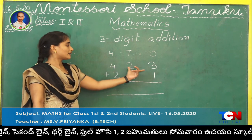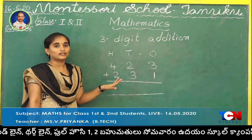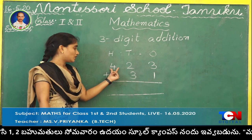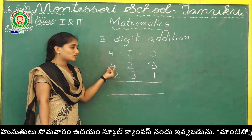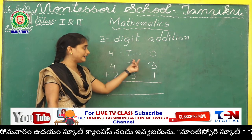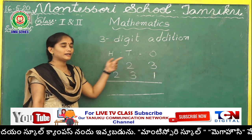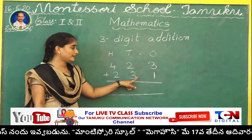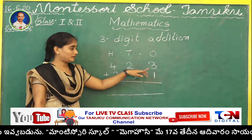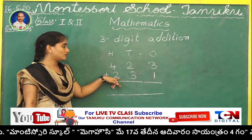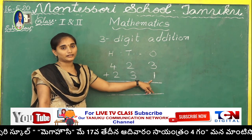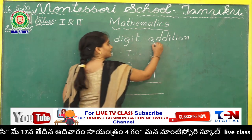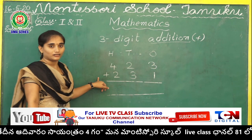See here children. First, read the question. Whenever you are starting questions, you have to read the question first. 4 is in the hundreds place, so 423 plus 231. What is the symbol, children? Plus. Plus is used for addition.